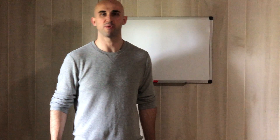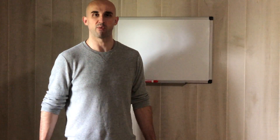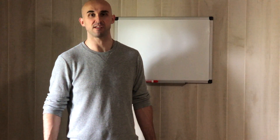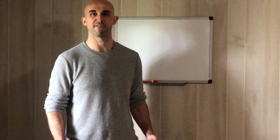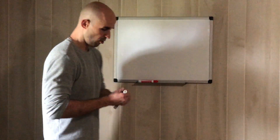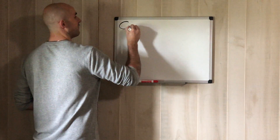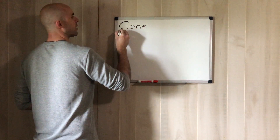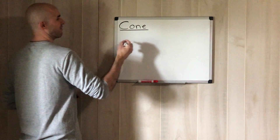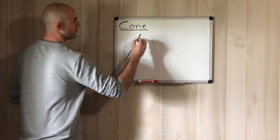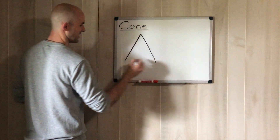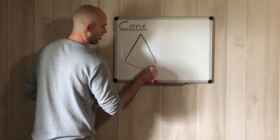Hey guys, hope that you're all doing well. Last week we worked with surface area and volume of a cylinder, the week before that surface area and volume of a rectangular prism. What we're going to work with this week is surface area and volume of a cone. Today we'll work with surface area, tomorrow we'll work with volume. A cone is exactly what you think it is.